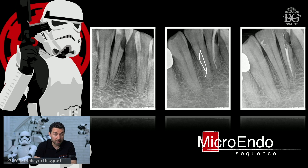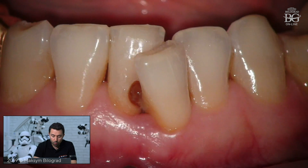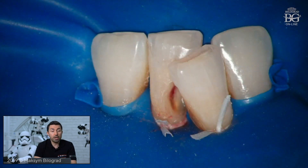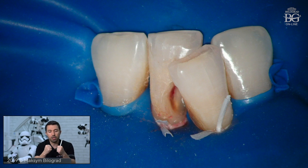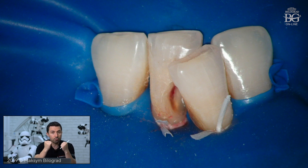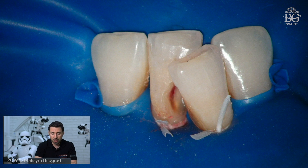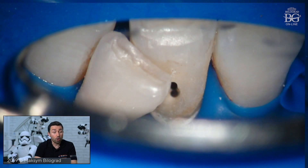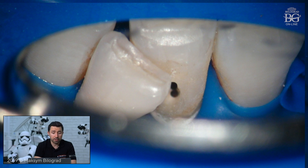We were able to instrument these root canals, perform proper irrigation, and obturate them completely. Now let's move to the restorative and rubber dam part. Rubber dam isolation was achieved using a heavy rubber dam membrane. The heavy rubber dam is really good because it gives strong retraction of soft tissues. I also used a floss tie to move the rubber dam piece more apically, to expose healthy tooth structure. Once caries was removed, we got this defect-oriented access and were able to find the two root canals.